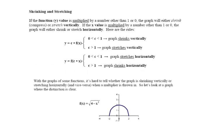As far as shrinking and stretching, it will be evidenced by a constant value either in front of the entire original function or inside the function operation — c times x — where it is multiplied by your independent variable. If the function's y value is multiplied by a number other than 1 or 0, the graph will either shrink, compress, or stretch vertically.